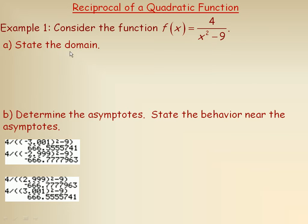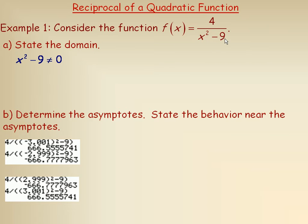In the first example, we're asked to state the domain. In order to state the domain for any rational function, there are often restrictions in the denominator — not always, but very often. And if that denominator is factorable, it's going to have restrictions. So x squared minus 9 cannot equal 0. If that equals 0, we'd be dividing 4 by 0 and we'd have an undefined expression.